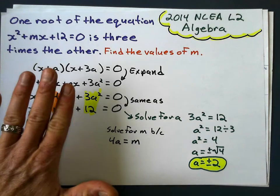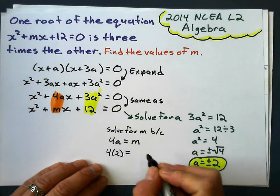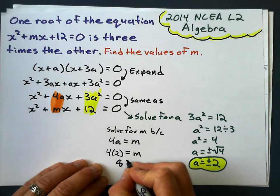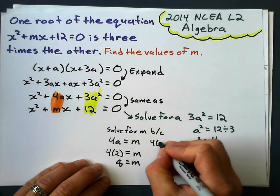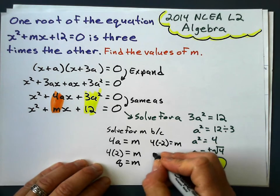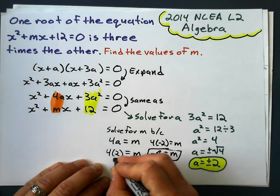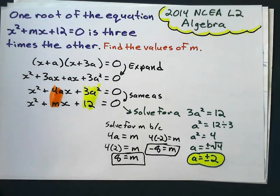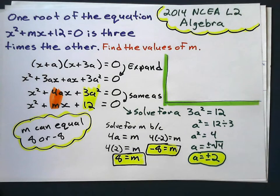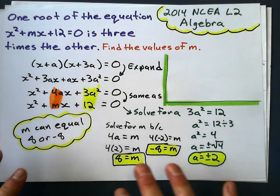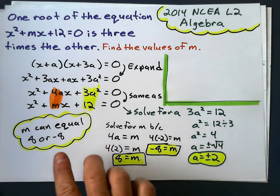So if a equals positive 2, then m equals 8. And if a equals negative 2, then 4 times negative 2 gives m equals negative 8. Those are the two values of m that could satisfy this equation. That's the answer — the problem is finished.